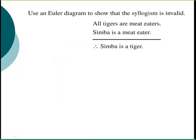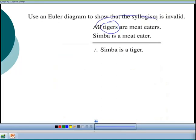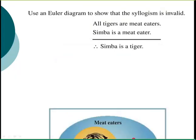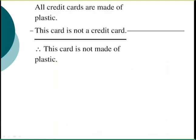Now we're going to draw an Euler diagram to show that this syllogism is invalid. All tigers are meat eaters — so tigers are inside the meat eaters circle. Simba is a meat eater, so Simba can be right here in the meat eater area. Therefore Simba is a tiger — but be careful! Simba is a lion, not a tiger. They're both meat eaters, but Simba doesn't fall in the tiger circle. This is an invalid argument, shown by the pictorial diagram.